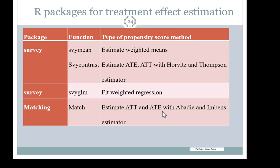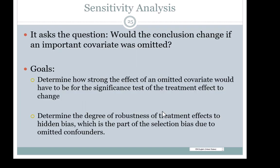Once you obtain a treatment effect estimate, standard error, and significance test, it's important to do a sensitivity analysis. The sensitivity analysis asks: would the conclusion change if an important covariate was omitted? Notice it's not asking whether you omitted a covariate — you can pretty much assume there is some omitted covariate — but it asks if that covariate is important enough to change the results. You try to determine how strong the effect of an omitted covariate would have to be for the results to change, which gives you a degree of robustness to hidden bias. If only a very strong covariate would change the results, it gives you some confidence.